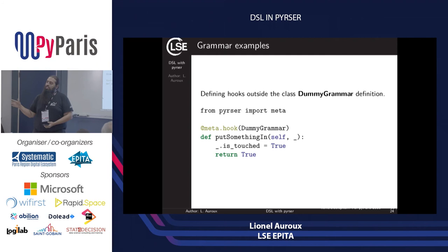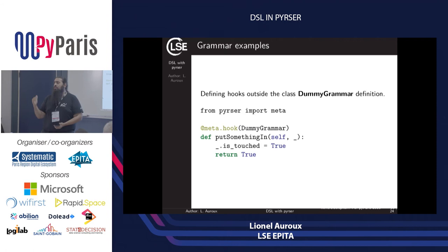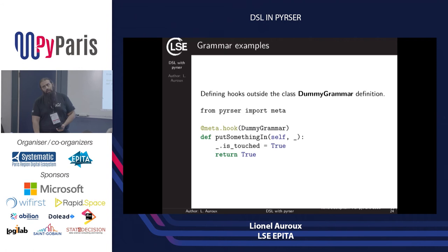For example, if you manage a symbol table for a C parser, you get the benefits of this. If you want to create an XML parser, you can match the closing tag against the opening tag — and if they don't match, return false, so the parser backtracks to the correct rules.